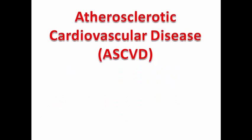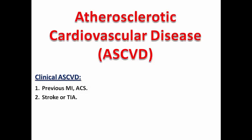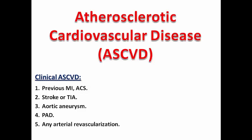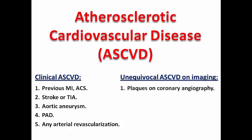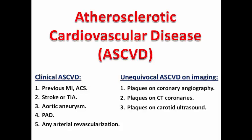The accurate definition of atherosclerotic cardiovascular disease includes clinical disease such as previous MI or acute coronary syndrome, history of stroke or TIA, presence of aortic aneurysm, peripheral arterial disease, or any history of arterial revascularization — coronary, peripheral, or carotid — and also the presence of unequivocal disease on imaging, like plaques on coronary angiography, CT coronaries, or carotid ultrasound.